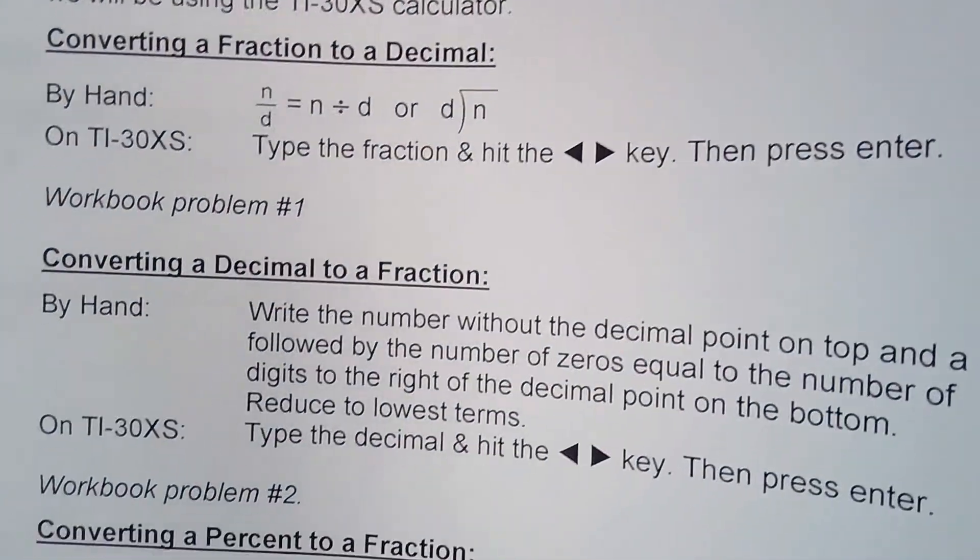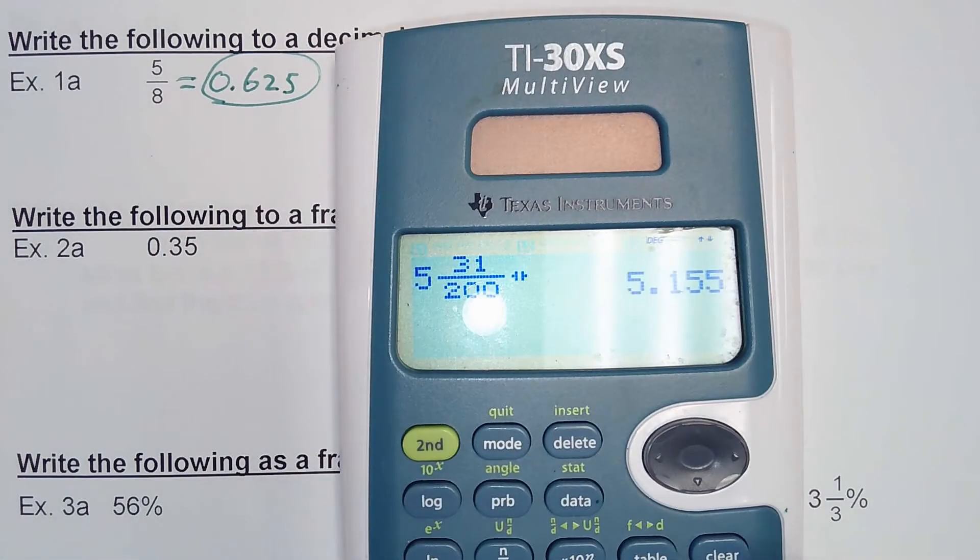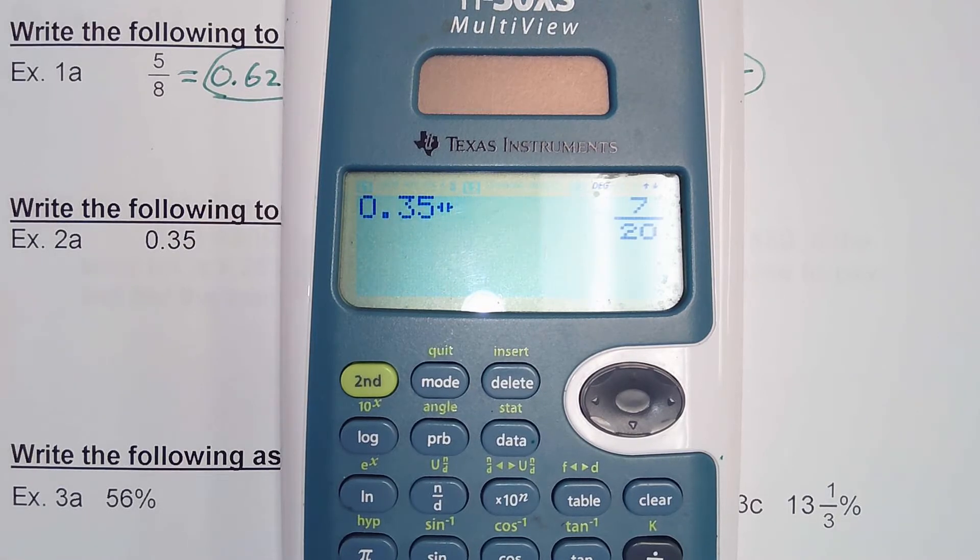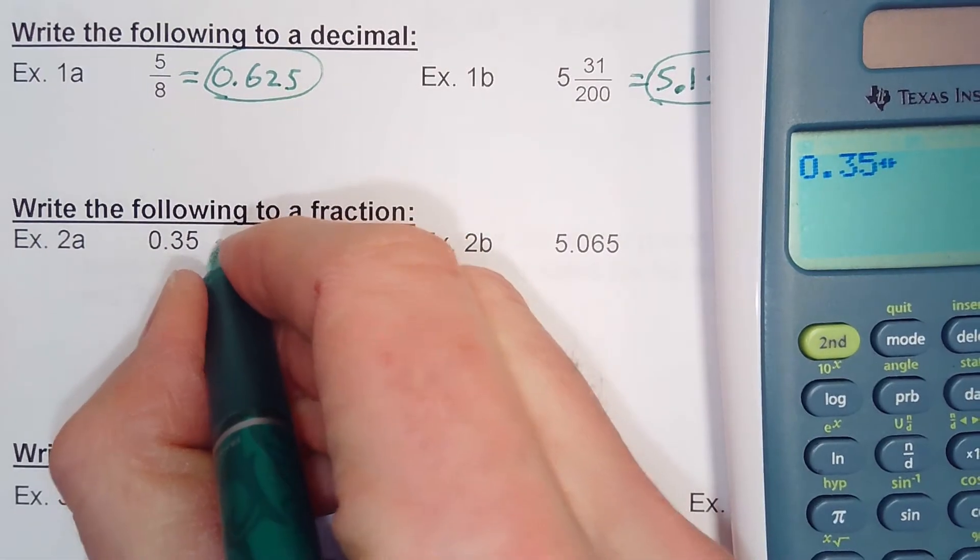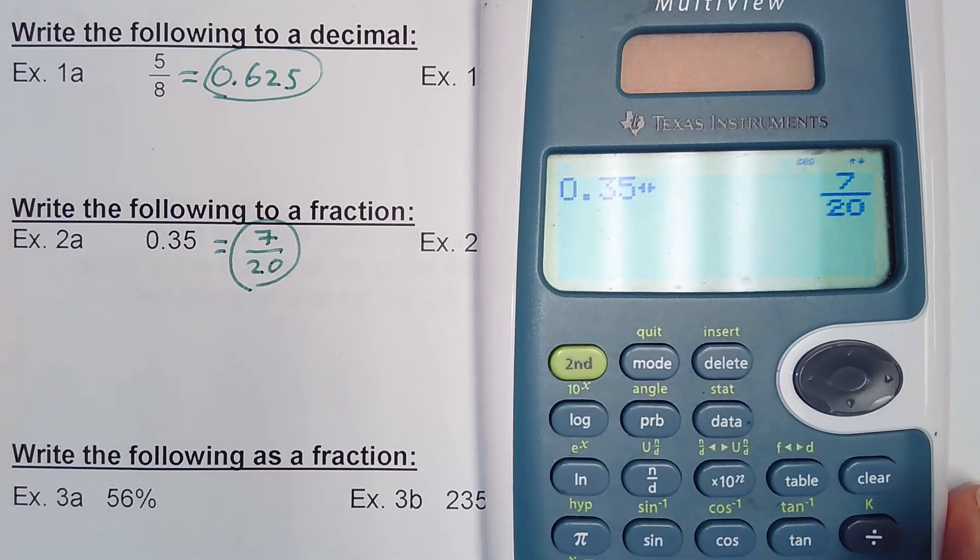Let's talk about converting a decimal to a fraction. If you're doing it by hand, you're going to write the number without the decimal point on top and a one followed by the number of zeros equal to the number of digits to the right of the decimal point on the bottom. Then reduce to lowest terms. On our calculator, we're going to type the decimal, hit the double arrow key, and then press enter. So if I've got 0.35, clear my screen, I'm going to type in 0.35, hit that double arrow key right next to the three key, hit enter: 7 over 20. So not only did it write it as a fraction for me, it also already reduced to lowest terms.